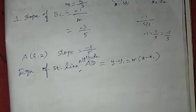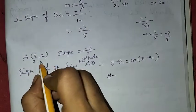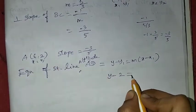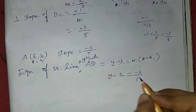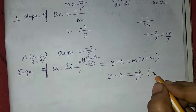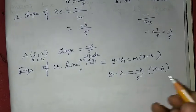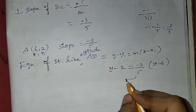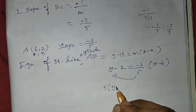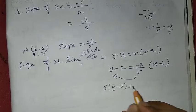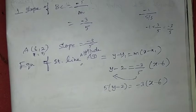Y minus 2 is equal to m, which is minus 3 by 5, into x minus x1 which is 6. Cross multiply: 5 into (y minus 2) is equal to minus 3 into (x minus 6).